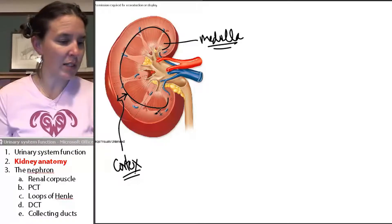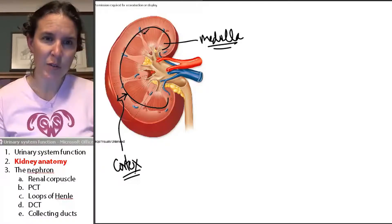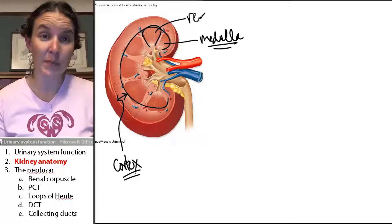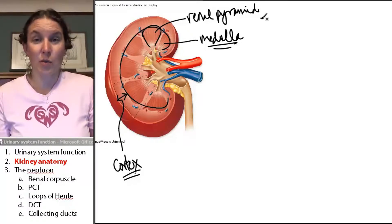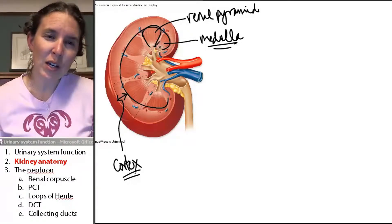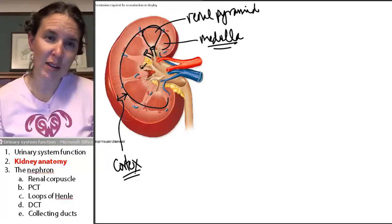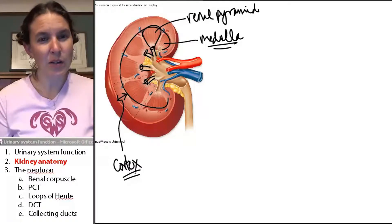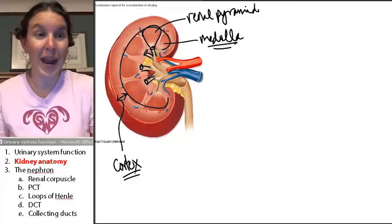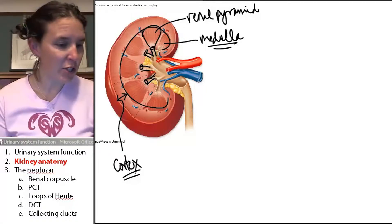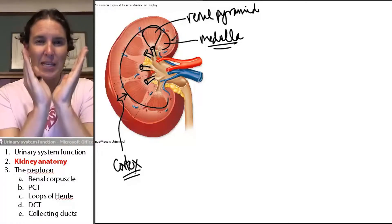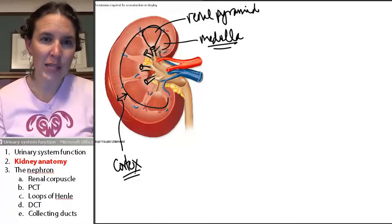Now let's look at some other things we need to identify. This structure right here is a renal pyramid. Remember our full purpose — we're filtering the blood. If you look at the base of every renal pyramid, you have a tube, and each renal pyramid dumps or empties into a particular tube. Each tube at the base of a renal pyramid is called a minor calyx.